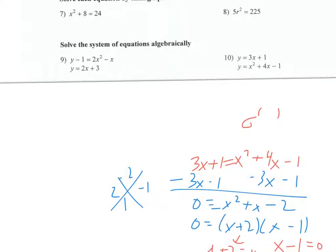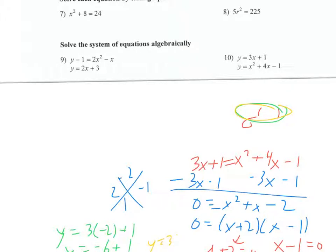I still need y values, so I'll plug each x back into the simpler original equation. For x equals negative two: y equals three times negative two plus one, which is negative six plus one, equaling negative five. So that point is negative two comma negative five. For x equals one: y equals three times one plus one, which is four. So that point is one comma four.